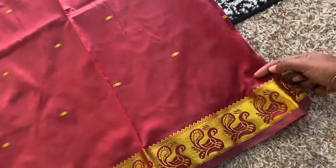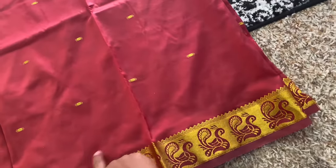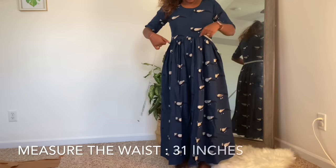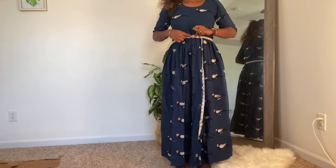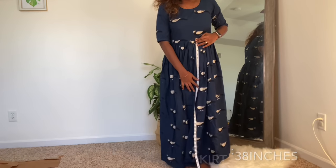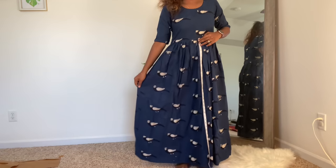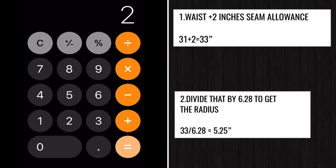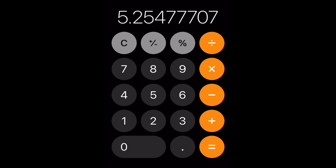You can cut the bottom. First, you can use the waist measurement. I made it — it is 31 inches. The waist measurement is plus 2, so it is 31 plus 2 equals 33. You can divide it — it is 6.28. So the radius comes to 5.25. In this circumference, we will cut that circle.